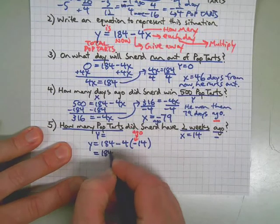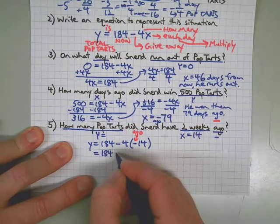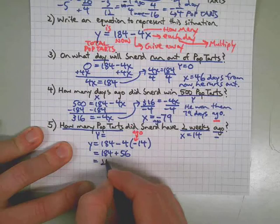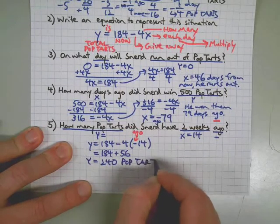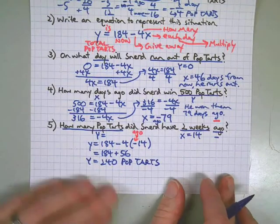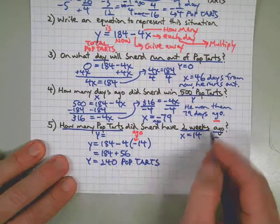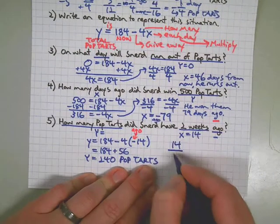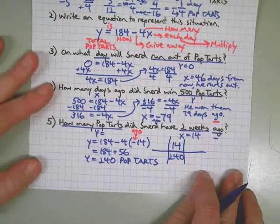Let's finish it off. Negative 14 and negative 4 makes a positive 56, and then that adds up to 240. Our answer is in terms of y or in terms of pop-tarts. 240 pop-tarts. Let's actually go up to the table and take a look at that, because that means our value would be 14 days and 240 pop-tarts if that was going into our table. Let's see if that fits up there.